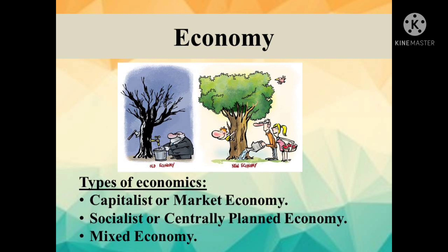The first is capitalist or market economy, in which the means of production are owned, controlled, and operated by the private sector. The second is socialist or centrally planned economy, which refers to an economy in which the means of production are owned, controlled, and operated by the government — also known as socialist economy. The third is mixed economy, which refers to a system in which the public and private sectors are allotted their respective roles for solving the central problems of the economy together.